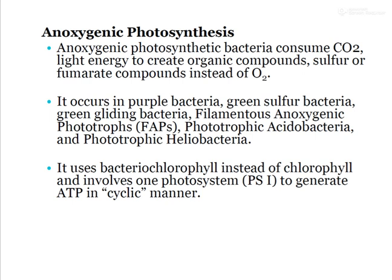Anoxygenic photosynthesis mainly uses bacteriochlorophyll instead of chlorophyll and involves one photosystem — photosystem one — to generate ATP in a cyclic manner. Carbon dioxide is also consumed and mainly used to create organic compounds such as fumarate compounds instead of oxygen. The liberation of oxygen does not happen in anoxygenic photosynthesis. This is one of the key ways oxygenic and anoxygenic photosynthesis differ.